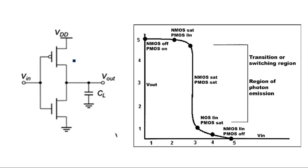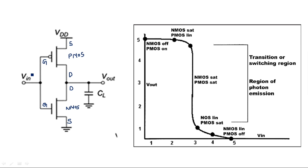The CMOS inverter consists of a PMOS device in the pull-up and an NMOS transistor in the pull-down. These are connected such that both drains are connected to the output, the source of the PMOS transistor is connected to VDD, the source of the NMOS transistor is connected to ground, and the gates of both transistors are shorted together and connected to the input. This is the realization of the CMOS inverter.